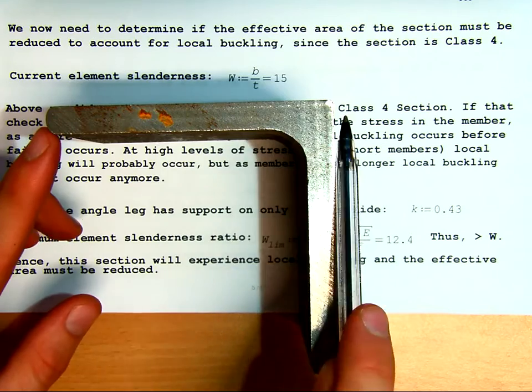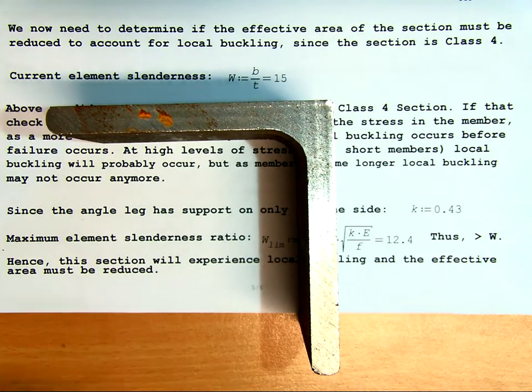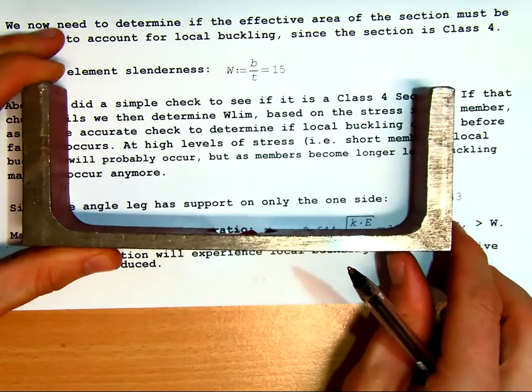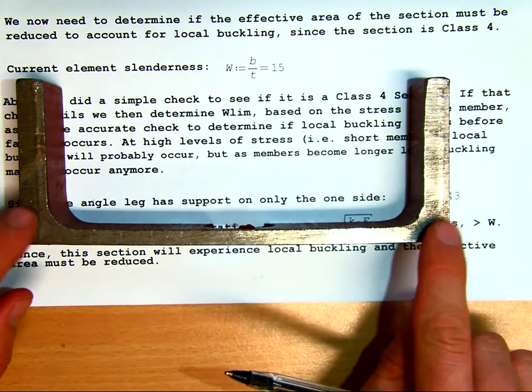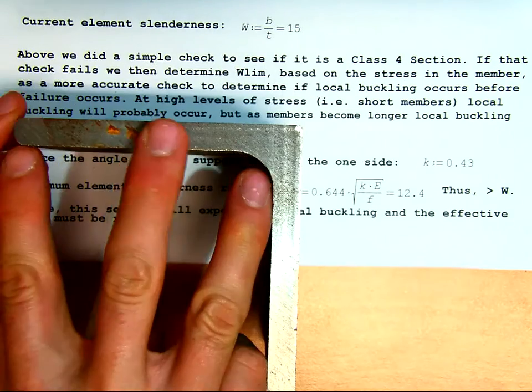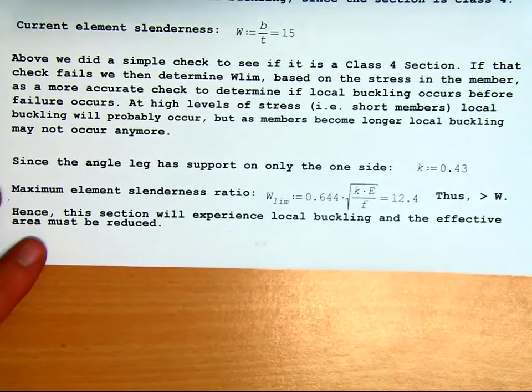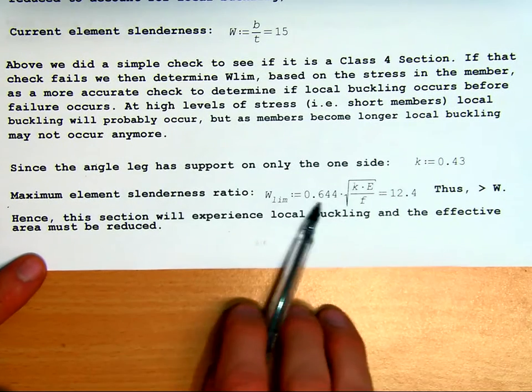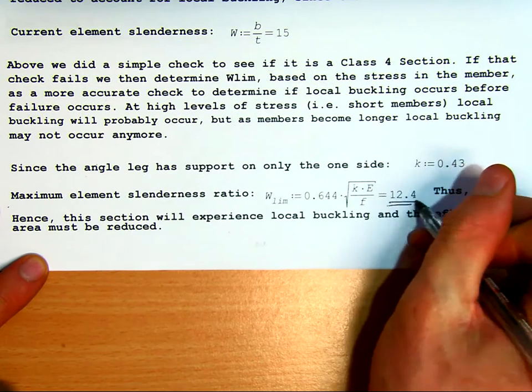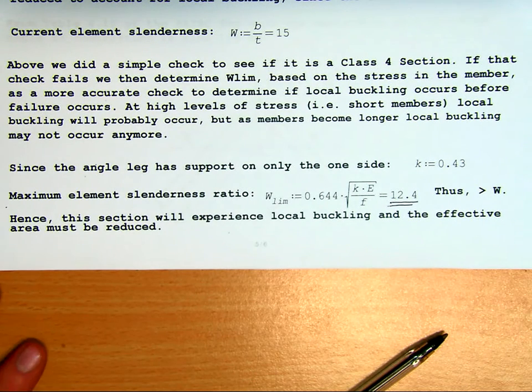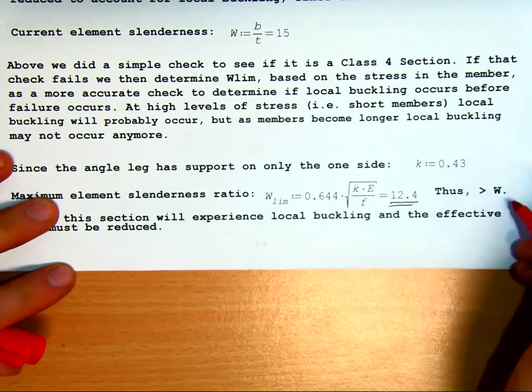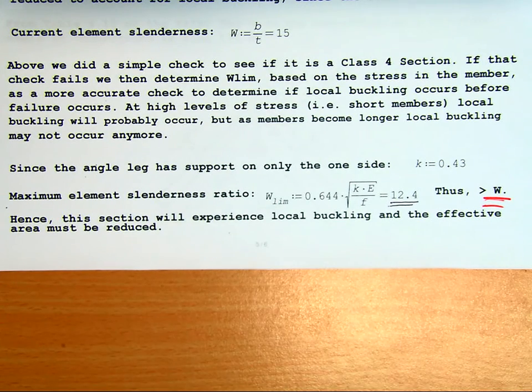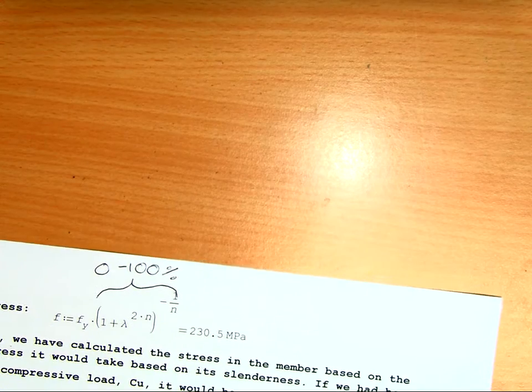Since the angle leg has support on only one side, k equals 0.43. Here's our angle. It sticks out from a joint, so this is a value of 0.43. If it was supported along two edges, then it would have a different k value. For instance, here is a channel. If we were checking local buckling, this would be k of 4, because this web is supported along both edges. Once we've got that, our maximum slenderness we can have, based on its actual stress and based on its properties, is 12.4. This means we still exceed our value. We're still greater than the actual slenderness. Hence, this section will experience local buckling and the effective area must be reduced.